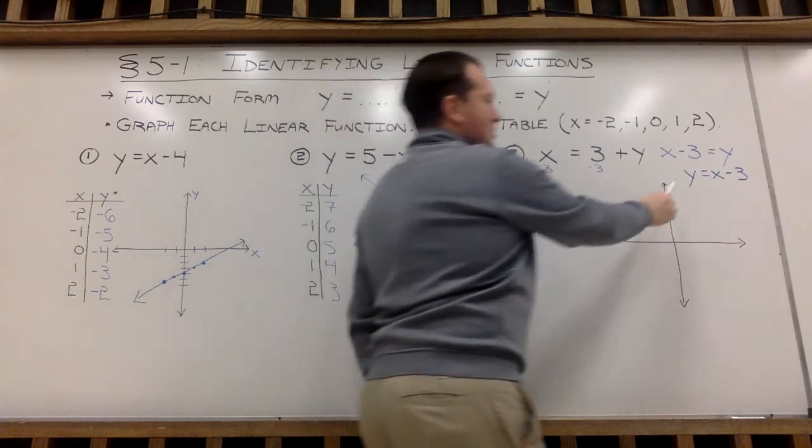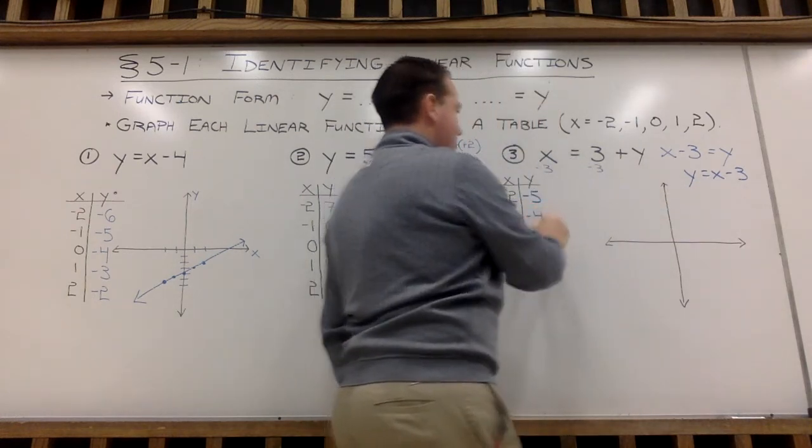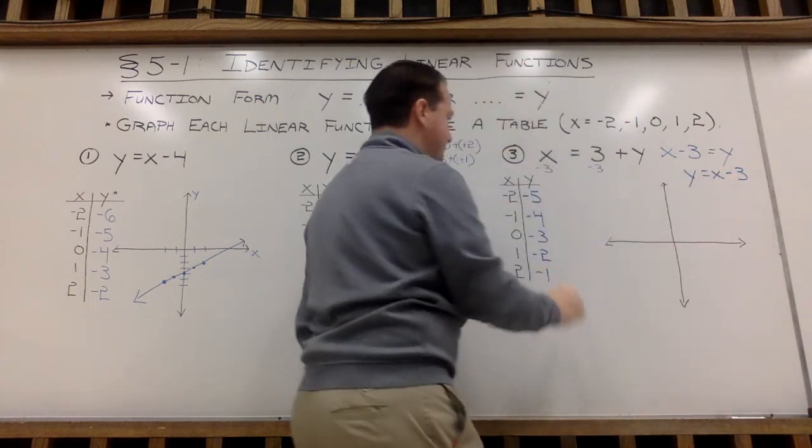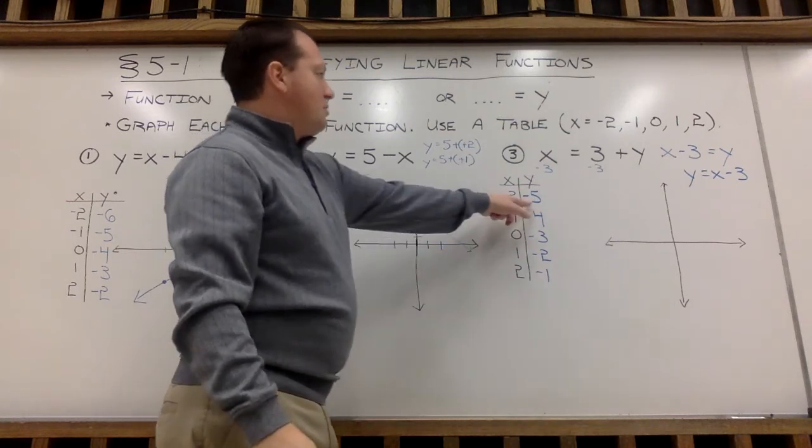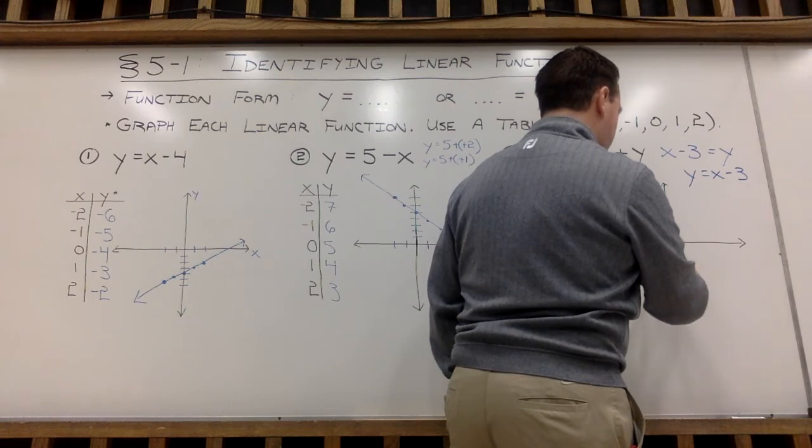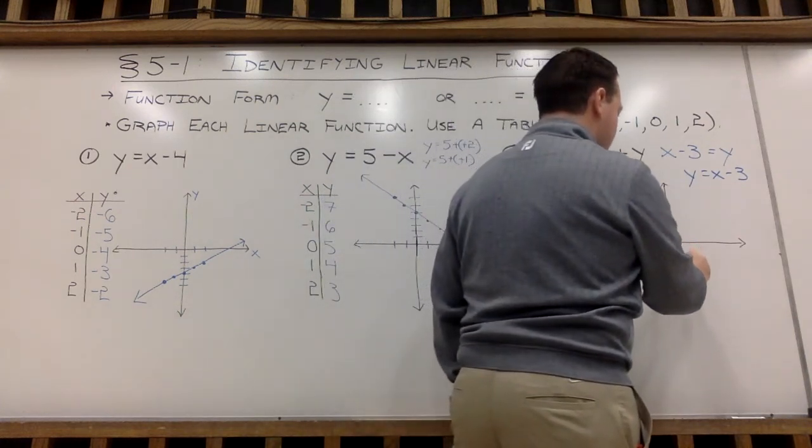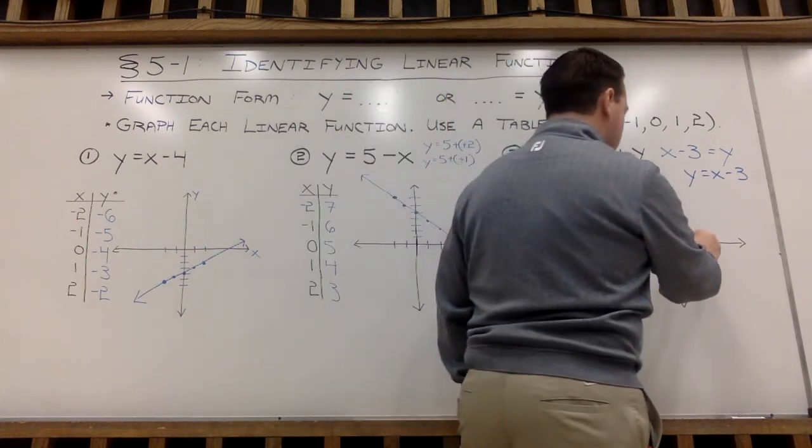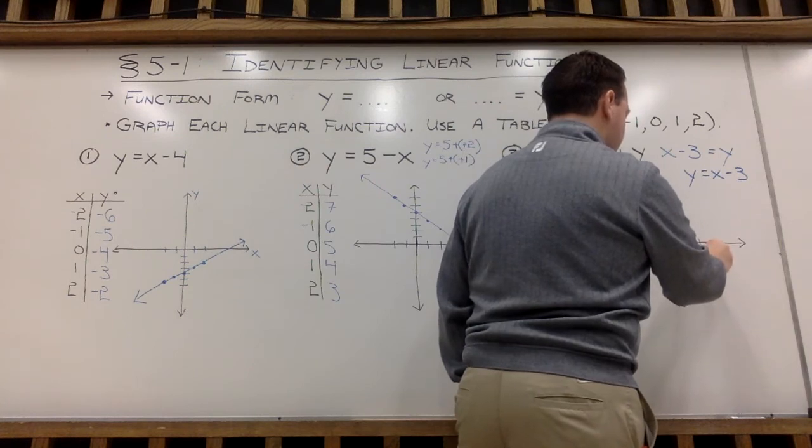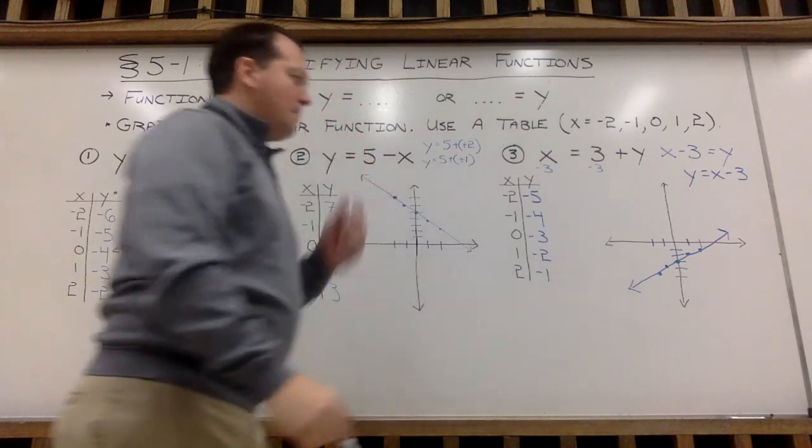So when I plug in negative 2 for x, y equals negative 2 minus 3 is negative 5. Negative 1 minus 3 is negative 4. 0 minus 3 is negative 3. 1 minus 3 is negative 2. And then 2 minus 3 is negative 1. So we have these 5 ordered pairs here. Negative 2, negative 5. I'm going to go 2 to the left and then down 5. 1 to the left, down 4. Nowhere left or right, down 3. 0, negative 3. 1 to the right, down 2. And then 2 to the right, down 1.